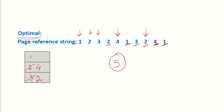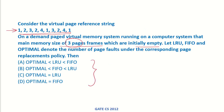So looking at the options, we see that the ordering is: Optimal has 5 faults, FIFO has 6 faults, and LRU has 9 faults. Therefore, the answer is that LRU produces the maximum number of page faults in this case.